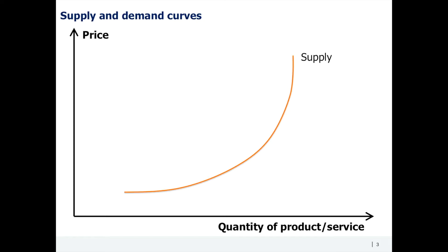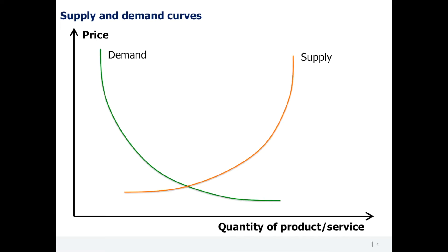It is important to understand that demand and supply curves are shifting constantly. The shifts might be tiny, moderate, or dramatic. That's why companies monitor the dynamics of demand and supply constantly in order to predict potential deficit or oversupply in their markets, and thus adjust their pricing strategy, production plans, etc.